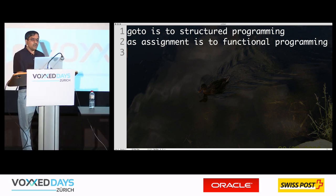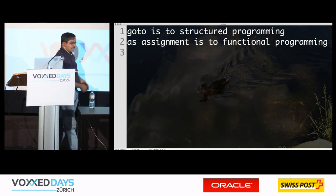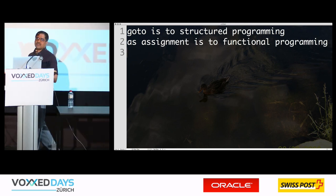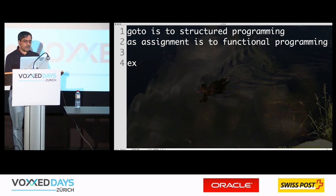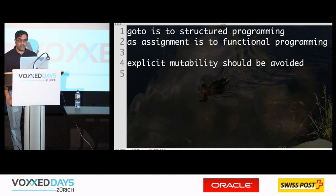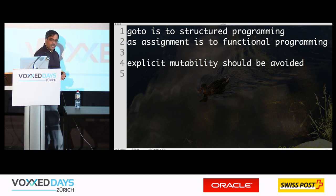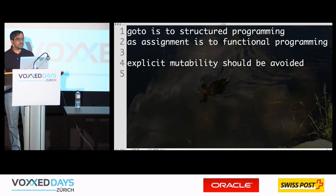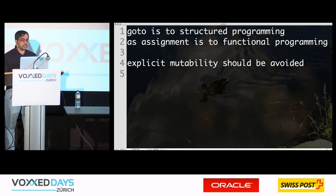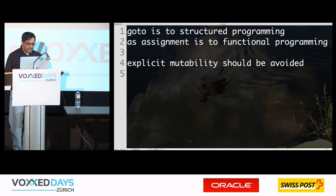The word I really want to emphasize here is explicit mutability — it should be avoided. I'm not saying we don't want to do mutability at all. What we are saying is we shouldn't be doing explicit mutability in our code. It could happen in a controlled fashion in layers below, and that's perfectly fine.